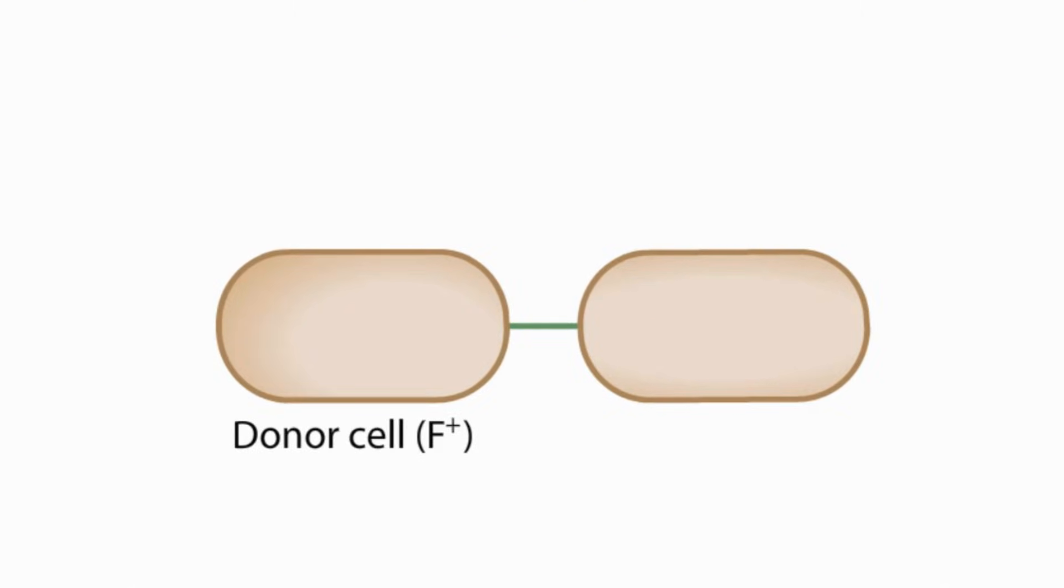The donor cell is called an F-plus cell because it carries a plasmid called F-factor for fertility factor. The F-factor contains all the genes needed for sex pili formation and for DNA export. The recipient cell lacks the plasmid, thus called F-minus. Both cells have a normal bacterial chromosome.